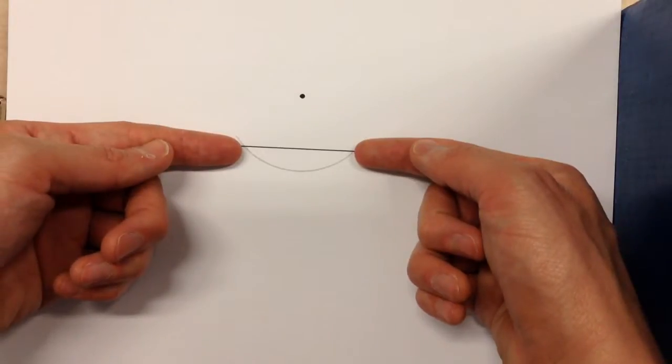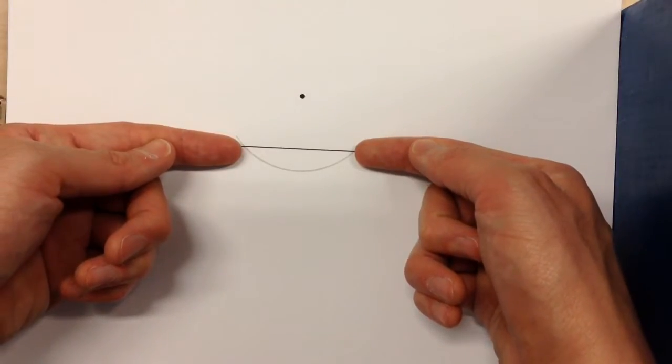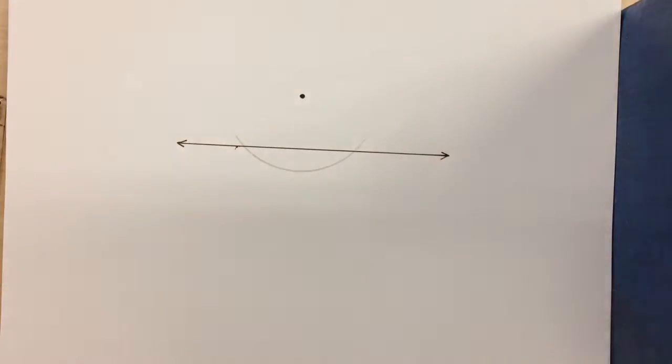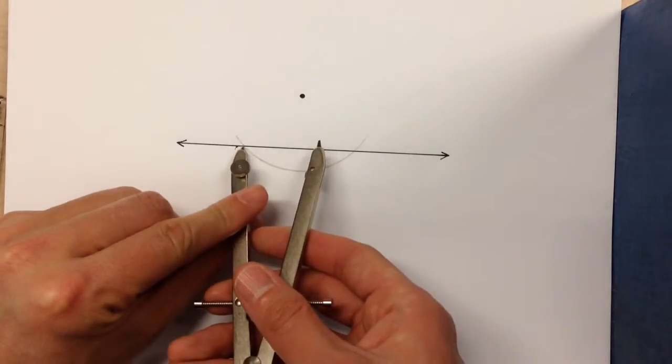Imagine this is your line segment and construct a perpendicular bisector for that line segment using the method that we've already learned.